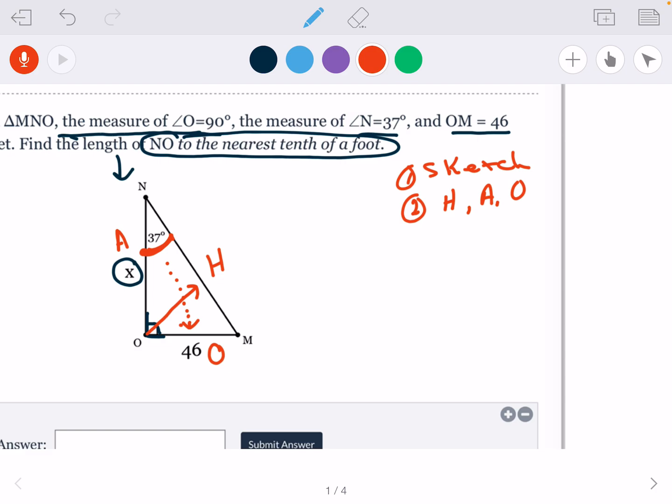So now you should have your SOHCAHTOA, or your sine equals opposite over hypotenuse. Sine is opposite over hypotenuse. Cosine is adjacent over hypotenuse. And tangent is opposite over adjacent. So you labeled these sides to see what information they have.